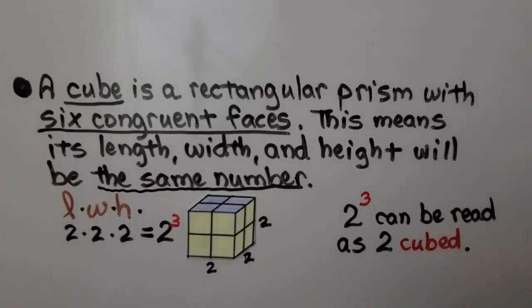A cube is a rectangular prism with six congruent faces. This means its length, width, and height will be the same number. So its length is two, its width is two, its height is two. So we have two times two times two. We have two raised to the third power. And two raised to the third power can be read as two cubed. It makes a cube.